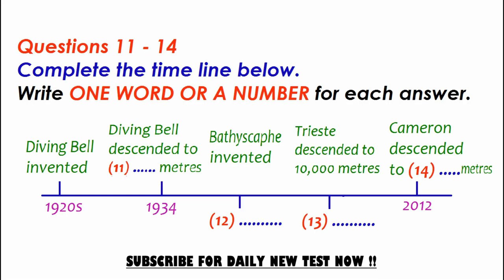The problem with the diving bell was that it had no power of its own, and there wasn't much room for the researchers to move around. So the next development was the bathyscafe, a small manned submarine invented in the 1940s. The difference was that the bathyscafe had its own power source, which allowed scientists to investigate the depths of the ocean more freely. A bathyscafe called the Trieste reached a record depth of 10,000 metres in 1960. Since then, a new record has been set by James Cameron, who descended to 11,000 metres for the first time in 2012.